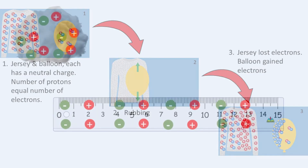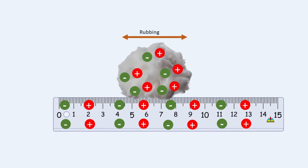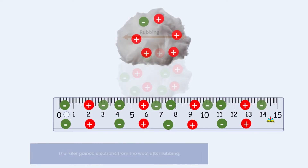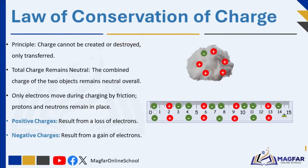A plastic ruler can be rubbed with a woollen cloth. The friction between the cloth and plastic ruler transfers electrons between the atoms of the two materials. The plastic ruler can become negatively charged as a result of this electron transfer. The charges in totality — from both the woollen cloth and plastic ruler — are still neutral when added together. The fact that charges cannot be destroyed but only separated is known as the law of conservation of charge.